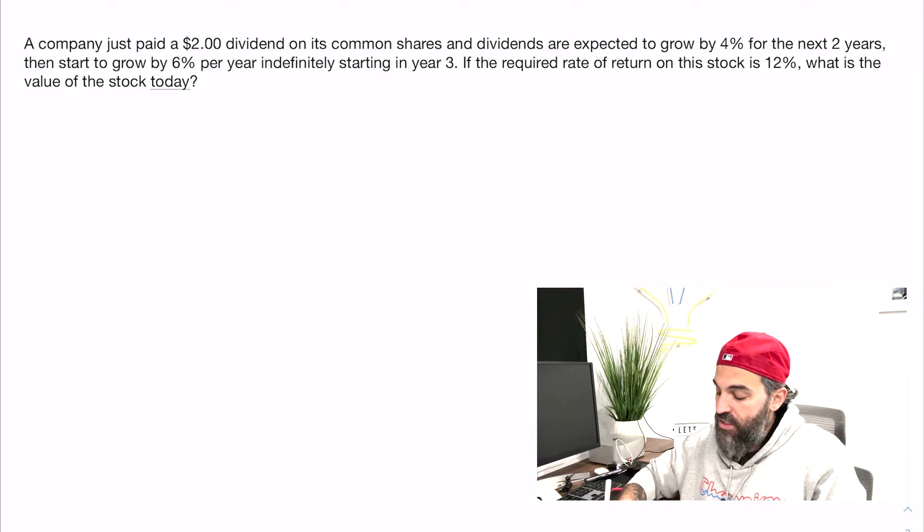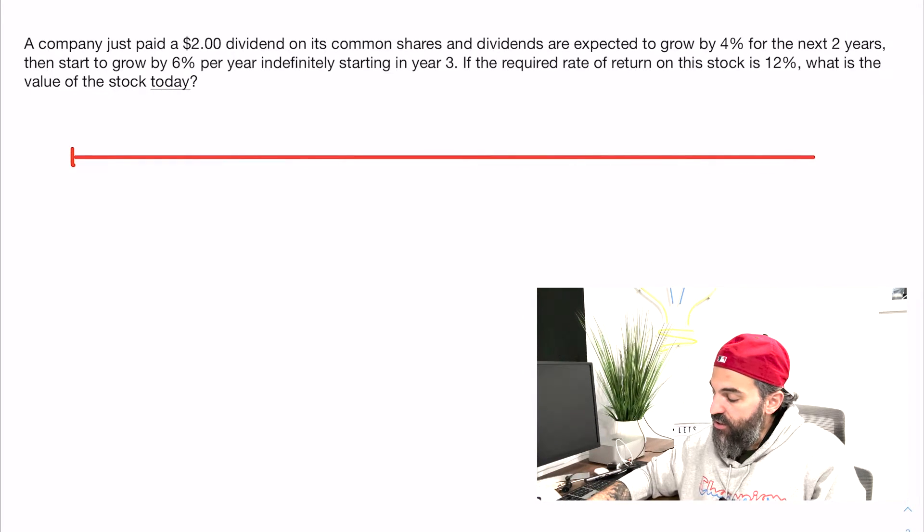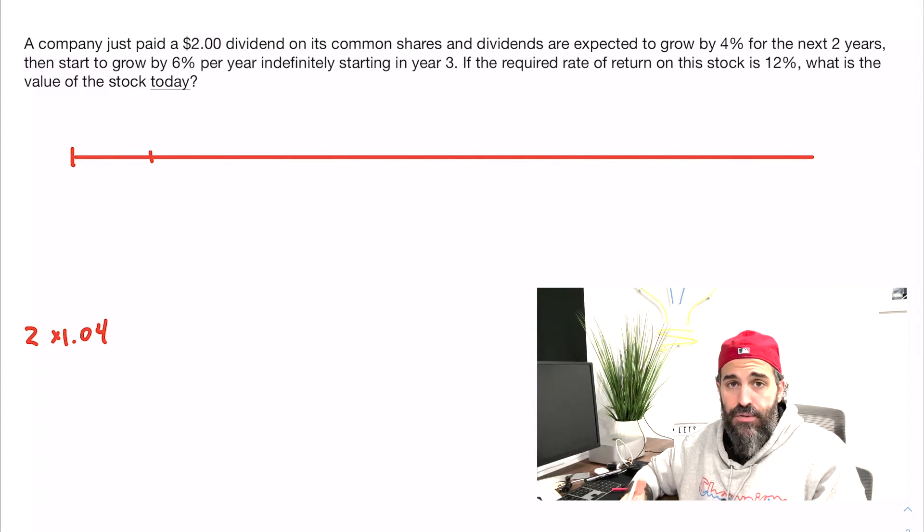If you review this on a timeline, if the stock just paid a dividend of $2.00, we need to find the first dividend next year. That would be $2.00 multiplied by 1.04, because it's going to get 4% higher—you just add 4%.